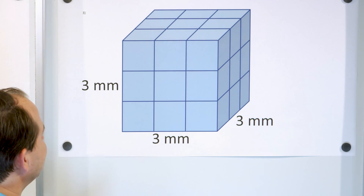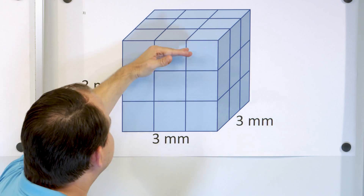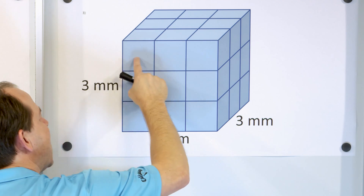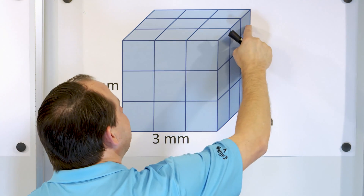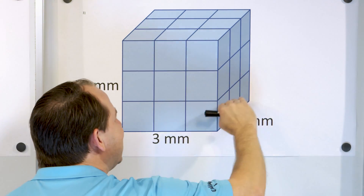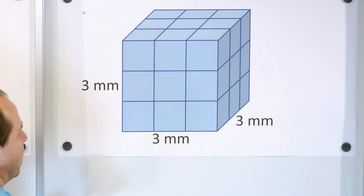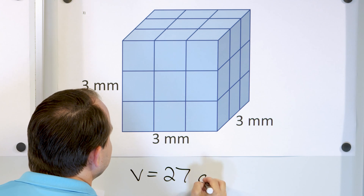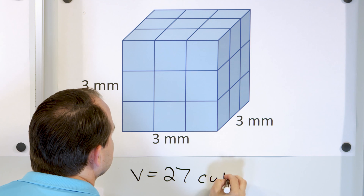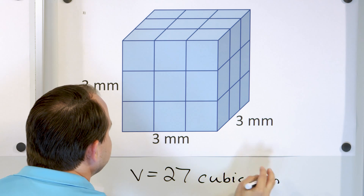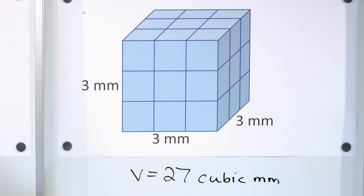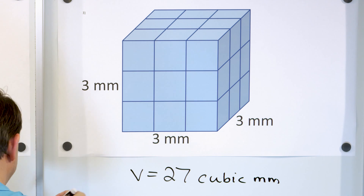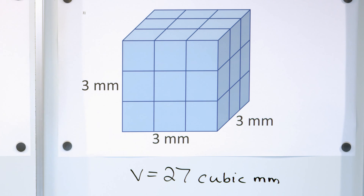How many layers total do we have? One layer, two layers, three layers. So it's nine, then nine more is 18, then nine more is 27. Another way to think about it: nine times three is 27. So the volume is 27 cubic millimeters. Without the cubes, all you'd have to do is three times three is nine, and nine times three is 27.